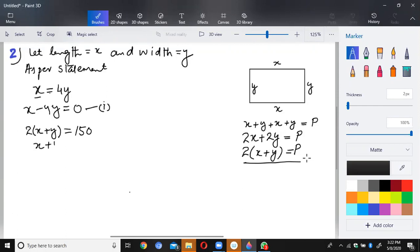x plus y is equal to 150 divided by 2, which is equal to 75. So, the second equation is x plus y is equal to 75.